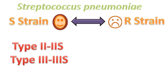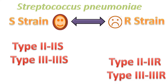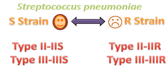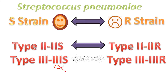The mutation of the S strain to the R strain is type-specific. If a 2S strain mutates to an R strain, the R cell can only mutate back to the 2S type and not to the 3S type. Similarly, if a 3S strain mutates to an R strain, it can only fluctuate between 3R and 3S and can never go to 2R or 2S forms.